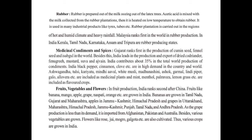Now let's take medicinal condiments and spices. Gujarat ranks first in the production of cumin seeds, fennel seeds, and isabgul in the world. India leads in production and export of dry coriander, fennel, mustard, summa, and ajwain, contributing about 35% of total world production of condiments. India's black pepper, cinnamon, and cloves are in high demand worldwide. Ashwagandha, tulsi, kariyatu, neem, aloe vera, and others are included as medicinal plants. Mint, menthol, palmarosa, and lemongrass are included as flavored crops.